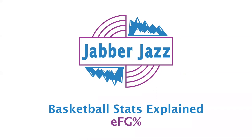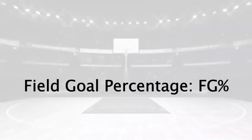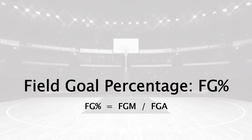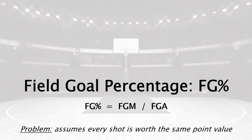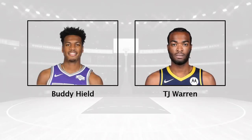We'll compare it to the standard field goal percentage that you may see in the box score. Field goal percentage is really just your made field goals divided by how many field goals you attempt — it's a straightforward calculation. But it has a real unique problem in that it assumes that every shot is worth the same point value; it assumes that a shot at the rim or beyond the three-point line is the same point value, and it's not. That lies the key problem with using the standard field goal percentage in the box score.